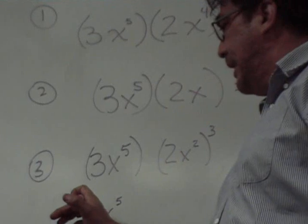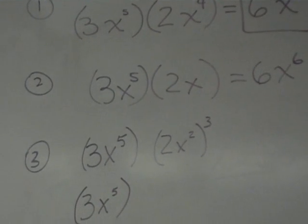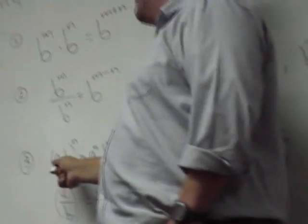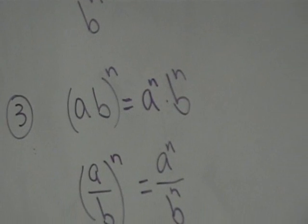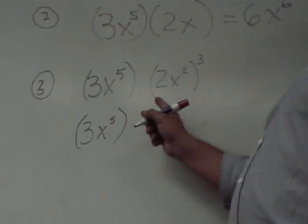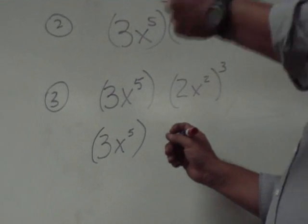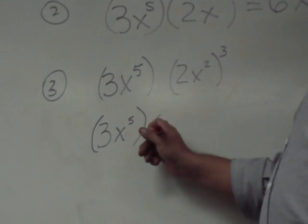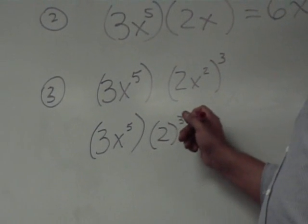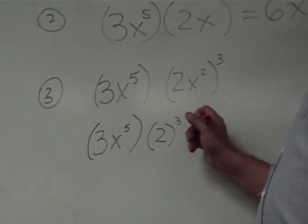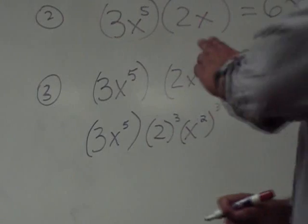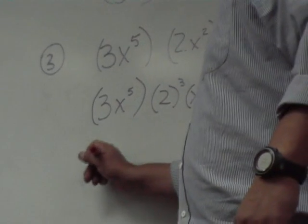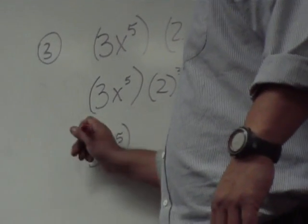3x to the fifth. Now we're going to say here, by this property right here, everything in parentheses has to be raised to the third power. So you're going to say, I'm going to write this step - you don't have to write this step if you feel comfortable just writing the answer. This would be 2 to the third times x squared to the third. You're raising the 2 to the third power and the x squared to the third power. You don't have to write this step if you don't want to. That would be okay.